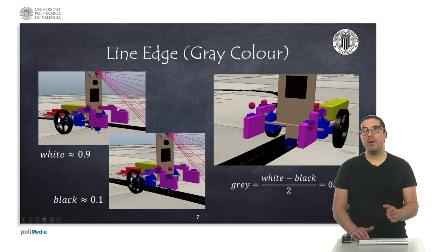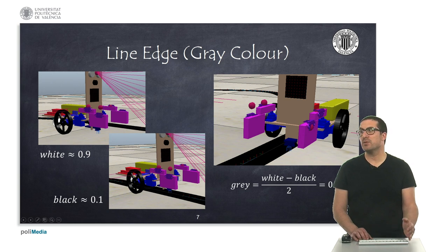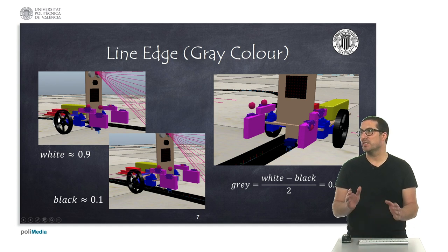So, therefore, when the sensor is just right on the edge of the line, the information that we expect to get will be 0.5.